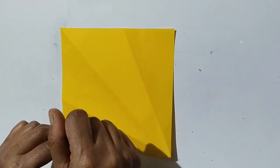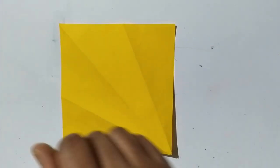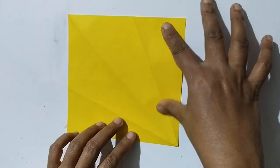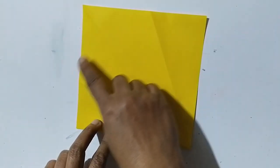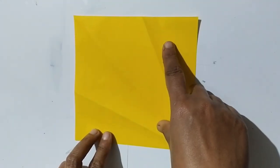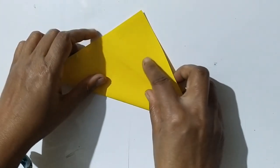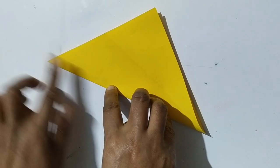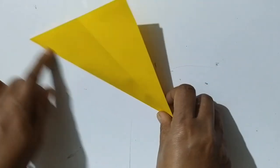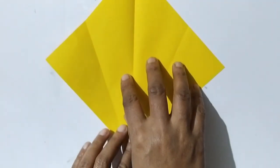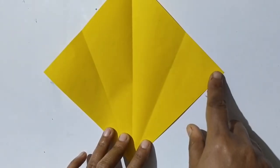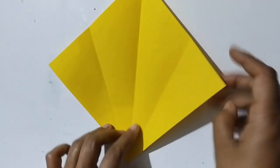Hello students, good morning. Today we are going to make a doll by paper. For this, first take a square sheet of paper, fold it in half like a triangle shape, then unfold it. Then fold the left and right corners to the center line.